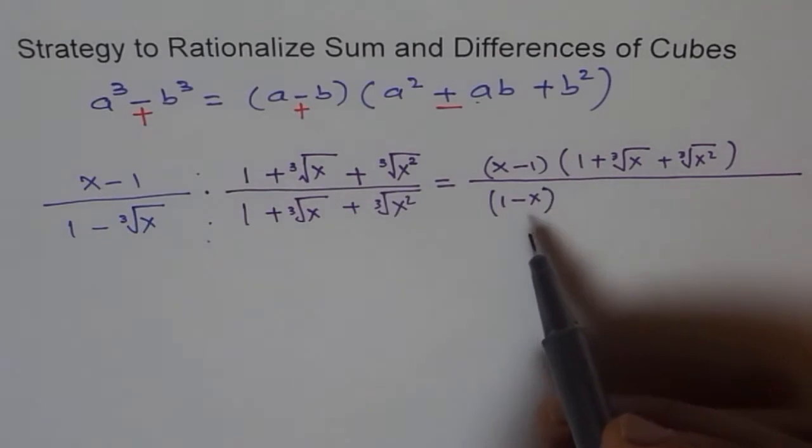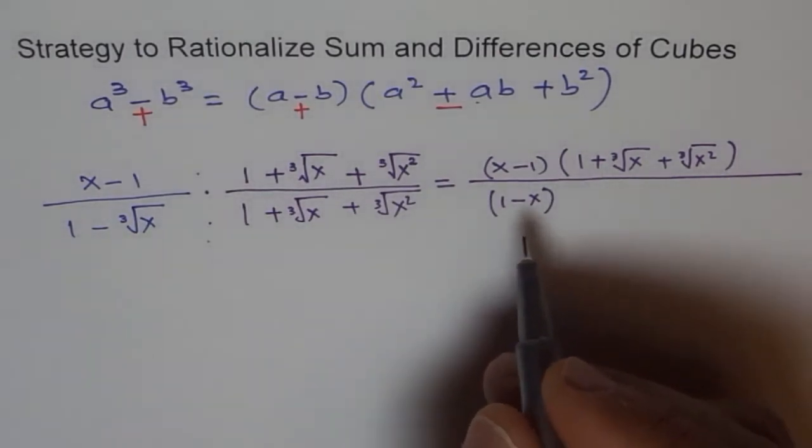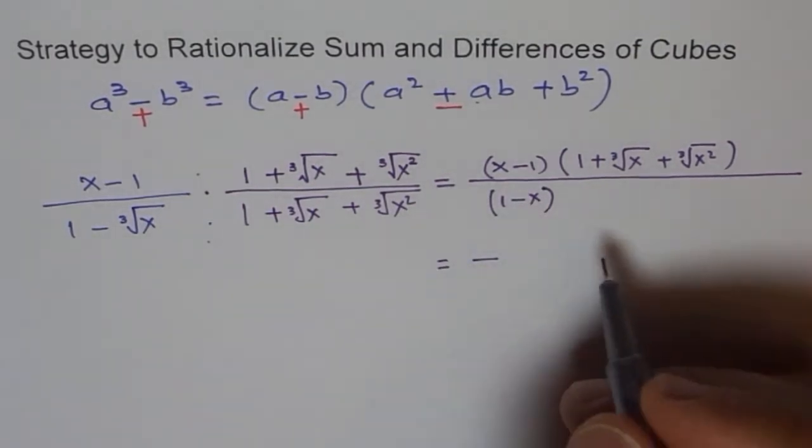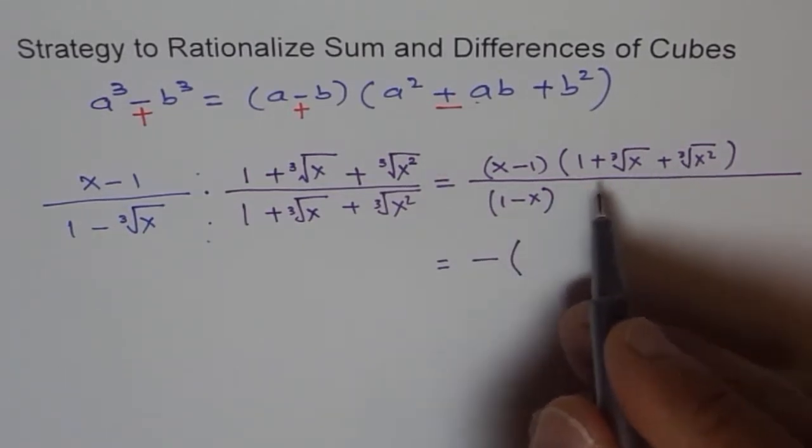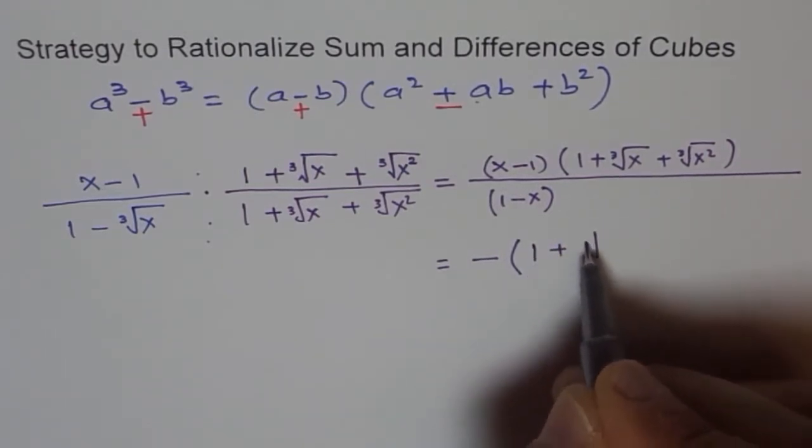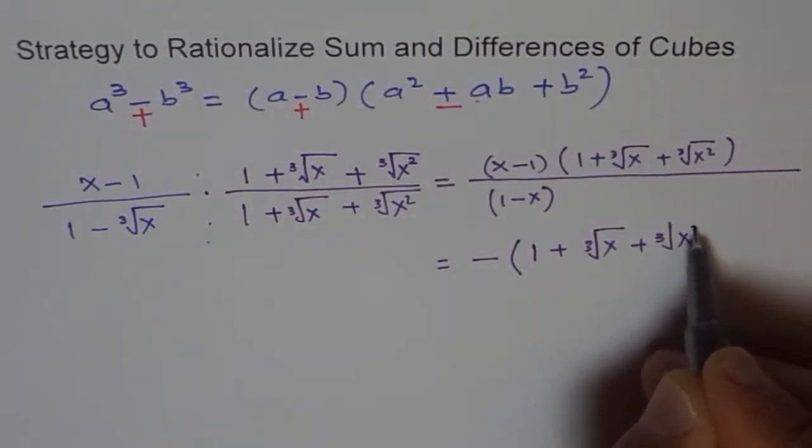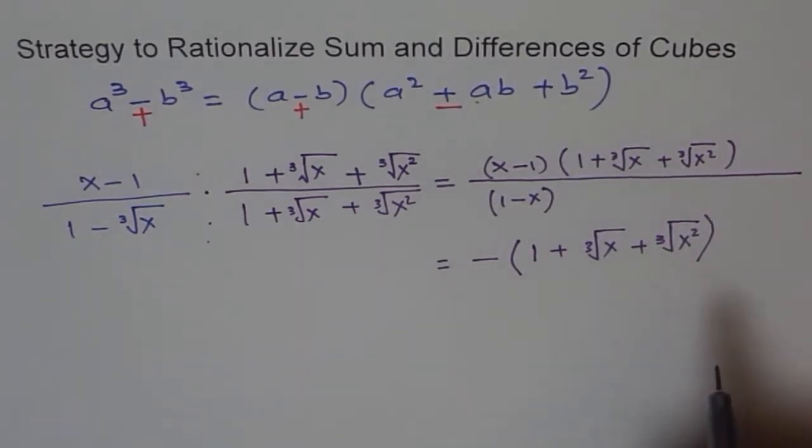Now you can simplify this and you will get this equal to minus, or because this divided by this is minus 1. Let me still keep it in bracket. We can rearrange it if you want to. So we can write this like 1 + ∛x + ∛(x²).